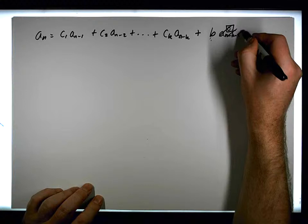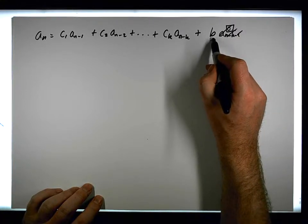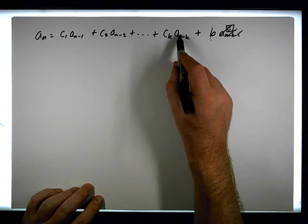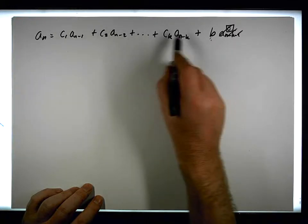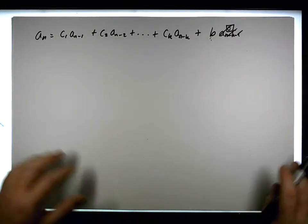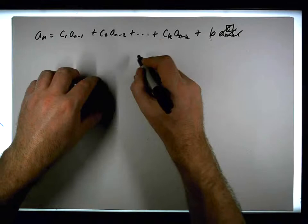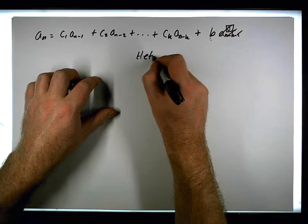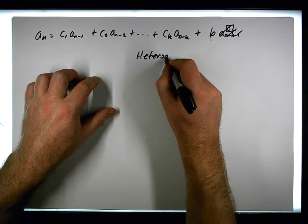This constant term here, the b, isn't associated with a previous term in the sequence, which we can't have. This would make this heterogeneous.